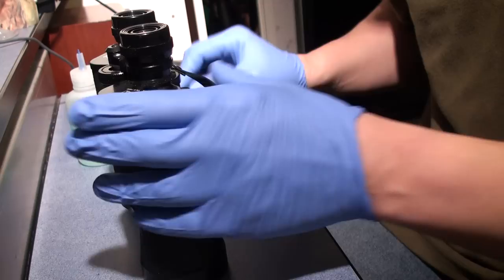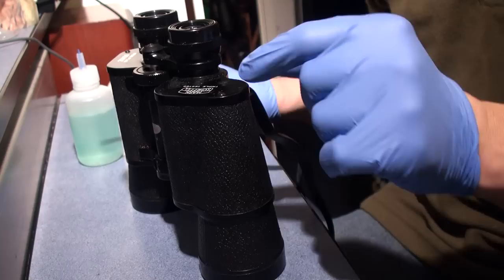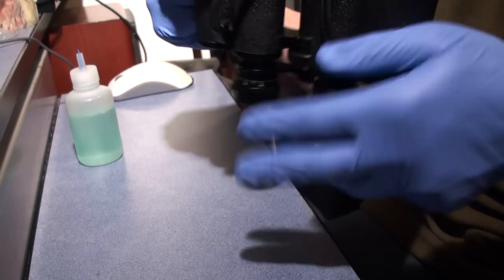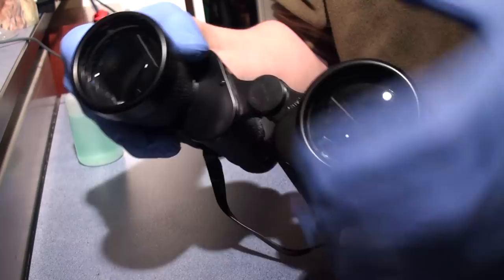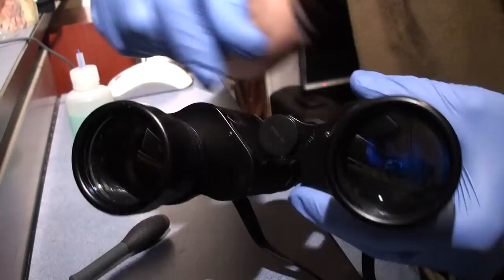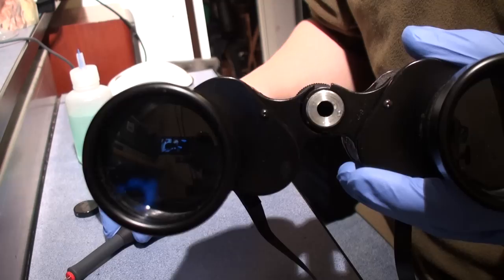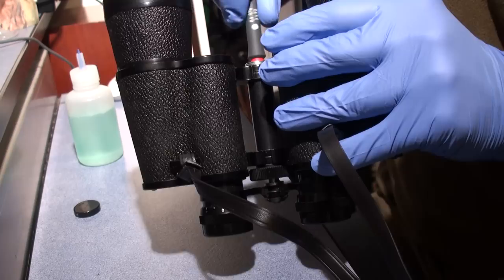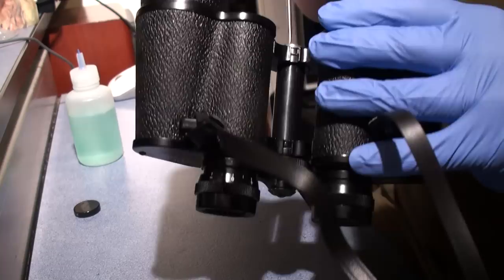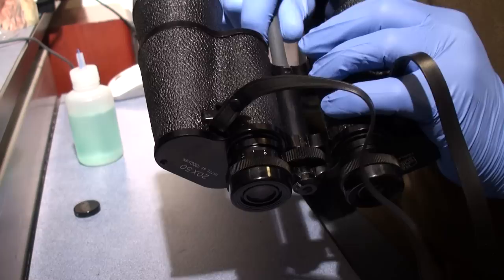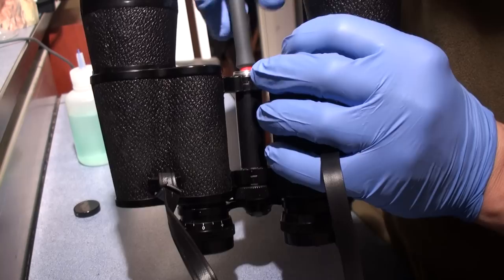You start on a Poro prism binocular like this, we'll start on the top or eye end. First thing we need to do is remove the focus bridge. So the first thing you do on the binocular like this is you undo the cap in the middle here. Remove that. And inside there there's a screw. You reach down and you can reach it with this screwdriver and give it a twist.